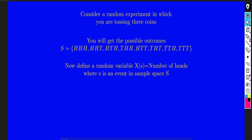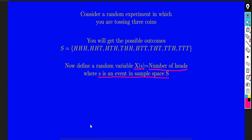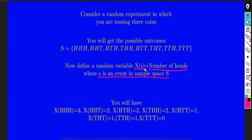To understand random variables, let us define a random variable X as the number of heads. Here S denotes an event in the sample space. If you define random variable X as the number of heads, you will get the following outcomes.